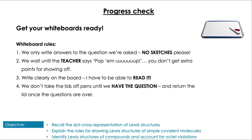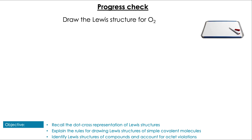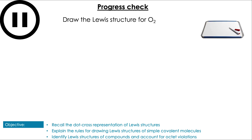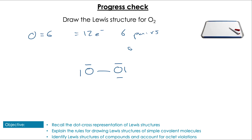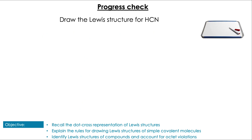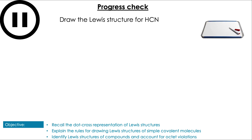On your whiteboards: draw the Lewis structure for O₂. Pause the video to have a go. Following those steps, we first get our total electrons — 12, giving us six pairs. We only have two atoms, so we join them together with one pair, leaving five. Putting those five around the outside leaves us with one oxygen just shy of its full octet, so we move one of those outer lone pairs into the bond, giving a double bond. So we have oxygen bonded with a double bond and two lone pairs on each atom.